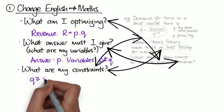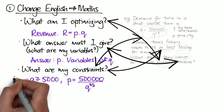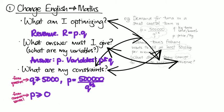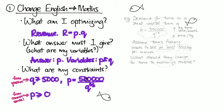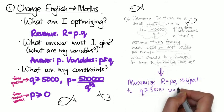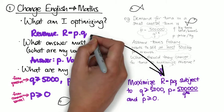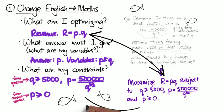So we can see that I'm optimising my revenue, my answer is going to be price, and I have two constraints from the question, and one from common sense. So I put that all together, and I get the maths version of what I'm actually trying to do. I'm trying to maximise revenue, subject to the constraints that I've found.